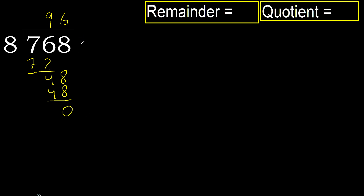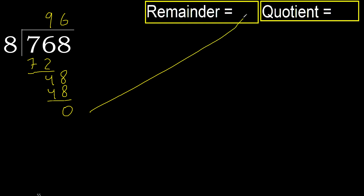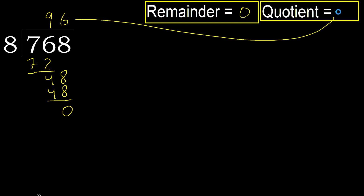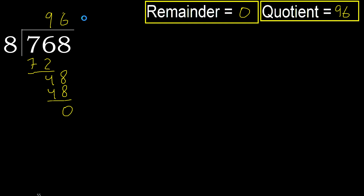Next, there is no number, therefore finish. The remainder is 0, therefore 768 divided by 8 is here.